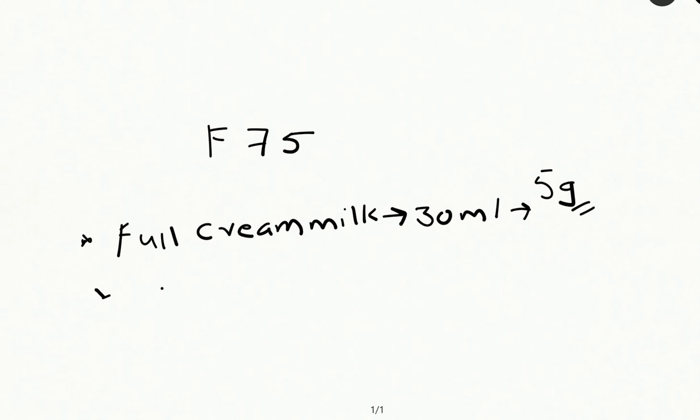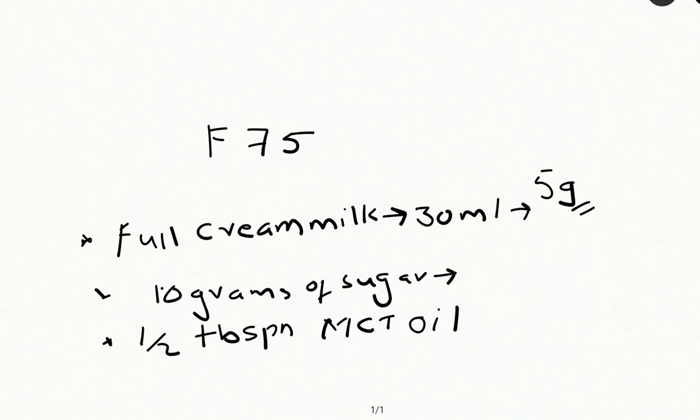Next, 10 grams of sugar, that's about two tablespoons. Then half tablespoon of MCT oil, that is medium chain triglyceride, which is easily available at stores. 1 ml gives around 7 calories.